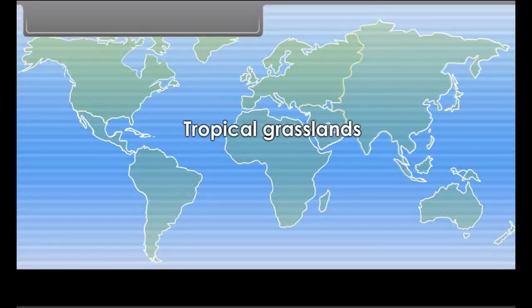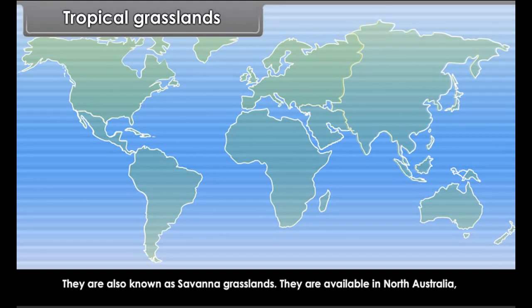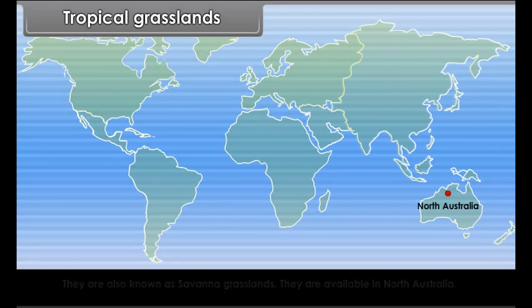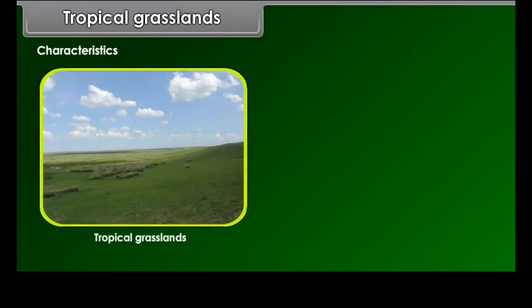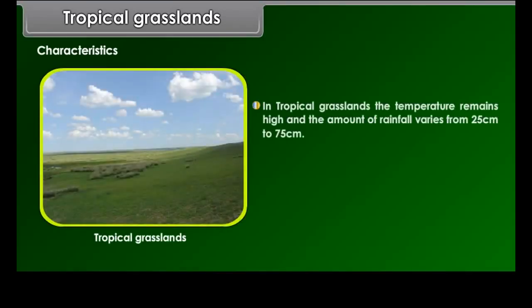Tropical Grasslands. They are also known as savannah grasslands. They are available in North Australia, Central America, Brazilian highlands, parts of Bolivia, Paraguay, Argentina and in African areas.